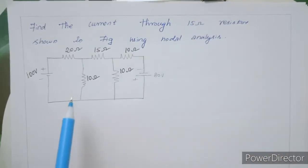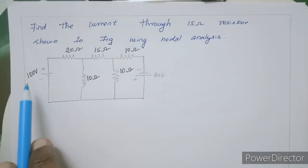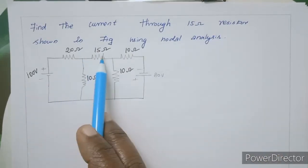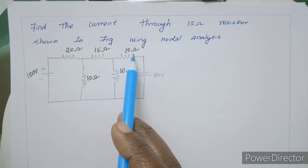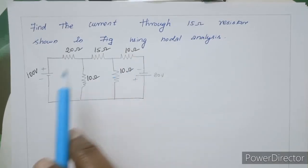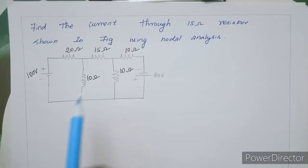So we have a circuit with the following resistors: 100 ohm, 20 ohm, 15 ohm, 10 ohm, 10 ohm, 10 ohm, and 80 ohm. This is the circuit we will analyze.